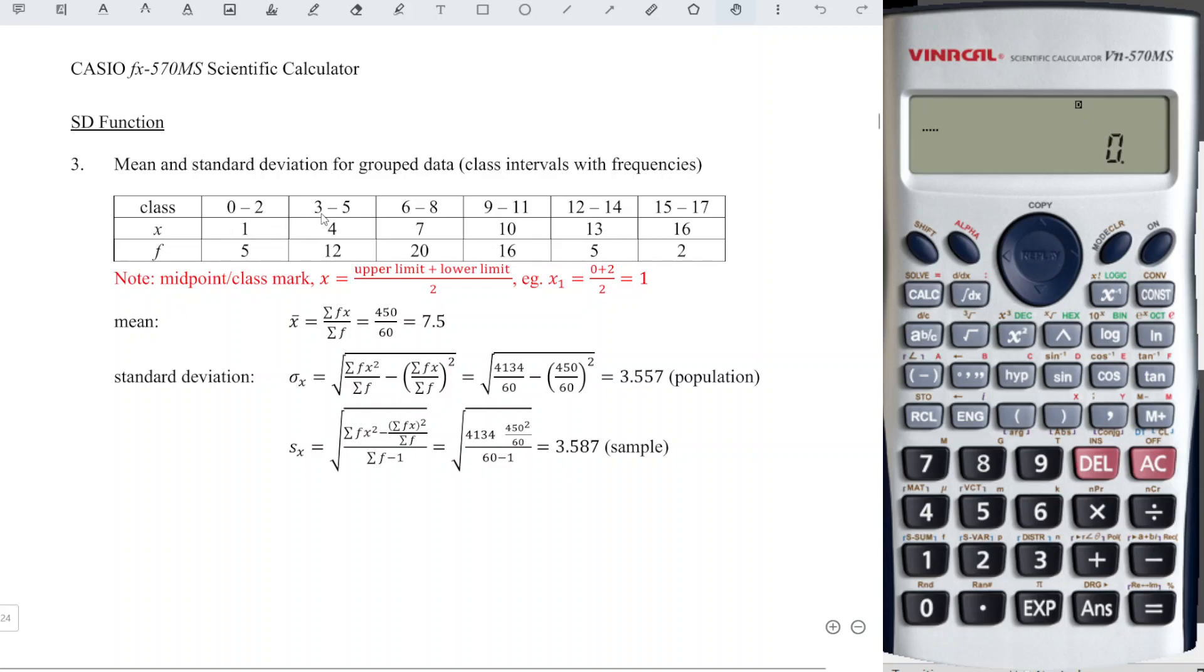For the second class, we take 3 plus 5 equal to 8 and divide it by 2, we get 4. And so for the rest of the classes.